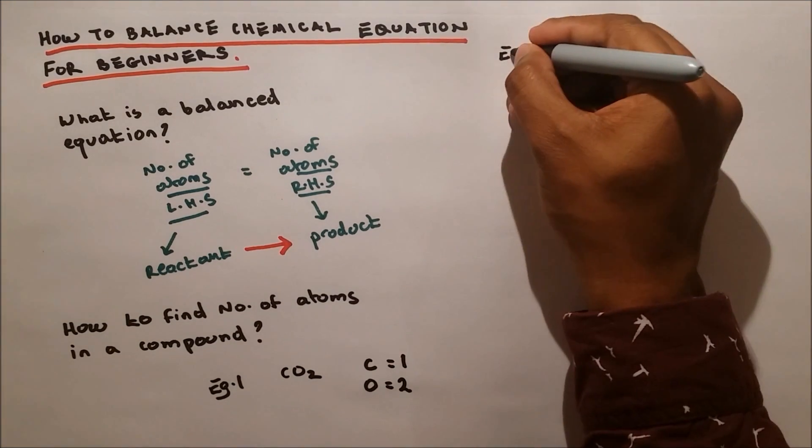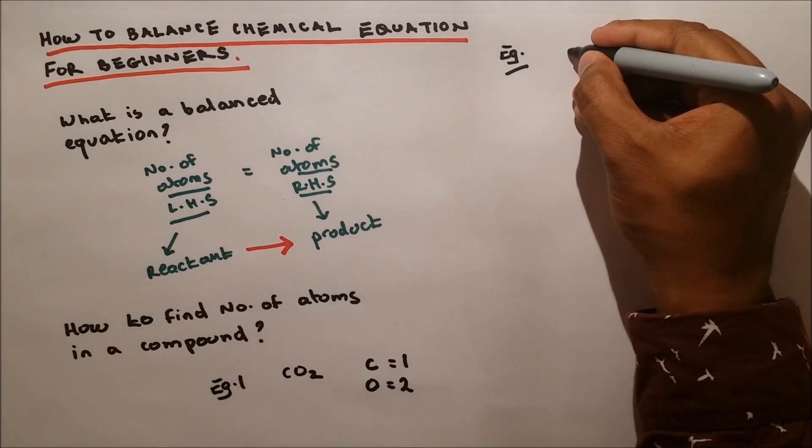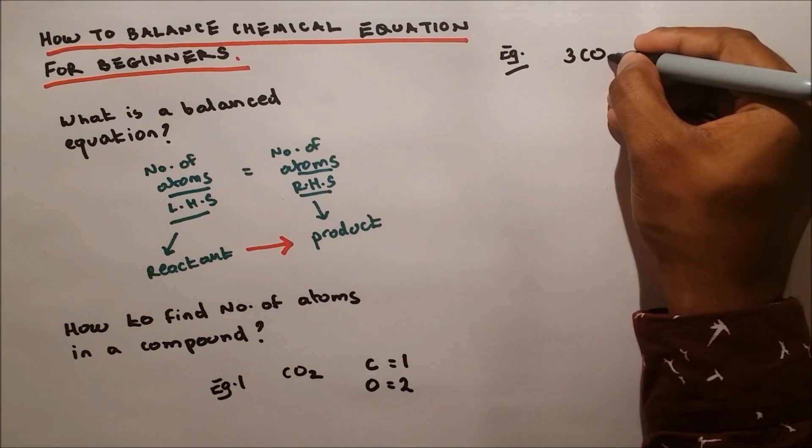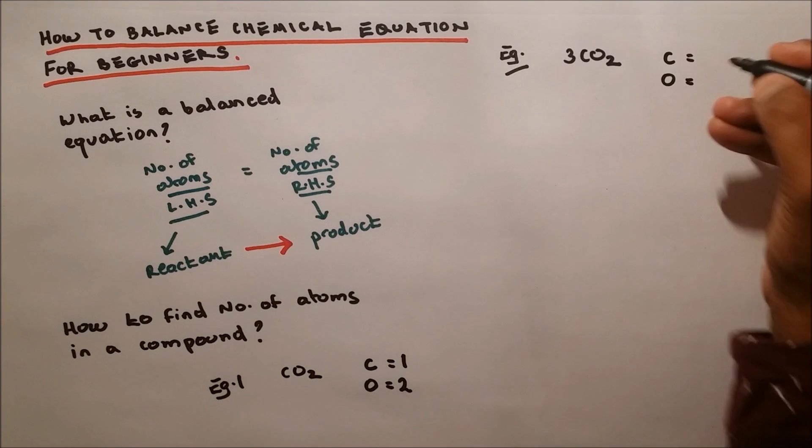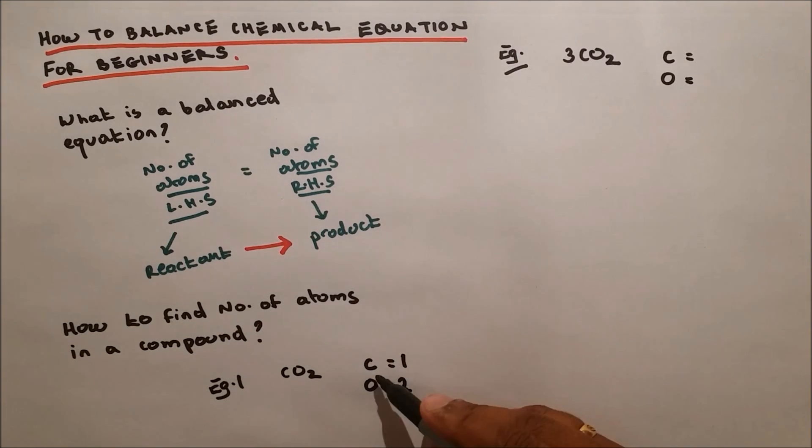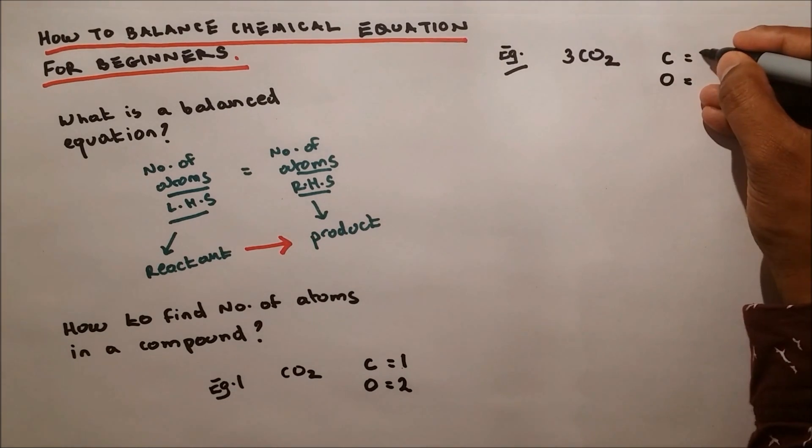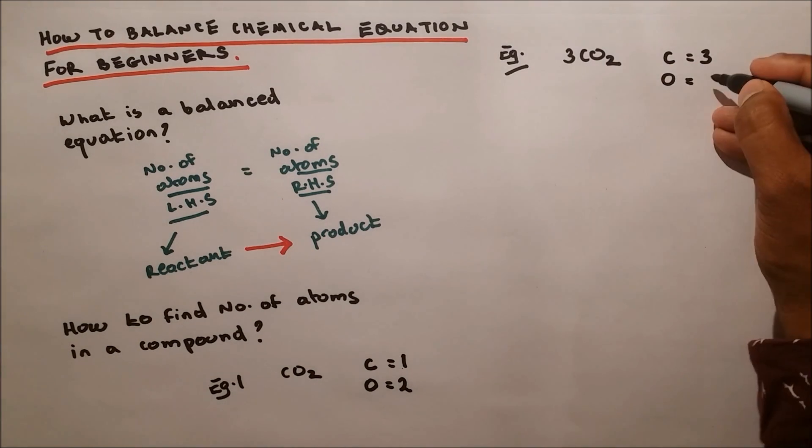Let's do another example. I'm going to take the same carbon dioxide and write 3CO2. This means we have three molecules of CO2. An easy way to do this is to calculate for one molecule and then multiply by three. So if you have one carbon, it becomes three. If you have two oxygen, it becomes six.